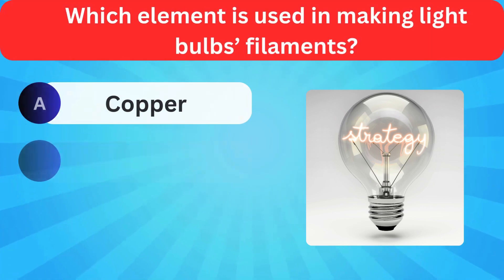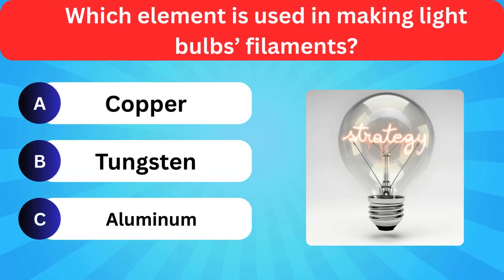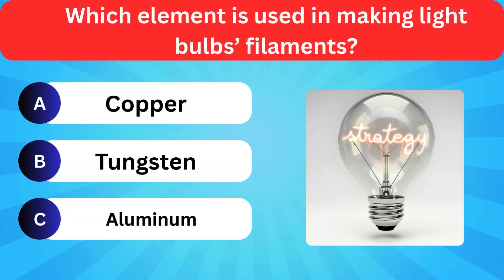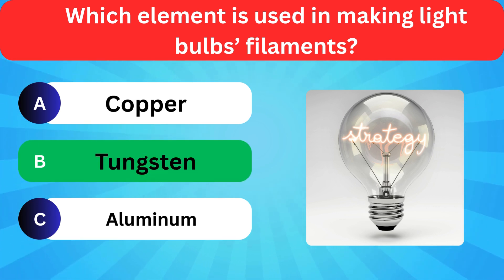Which element is used in making light bulb filaments? Options: Copper, Tungsten, Aluminium. Correct answer is tungsten.